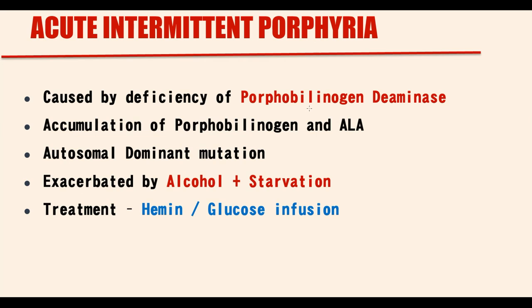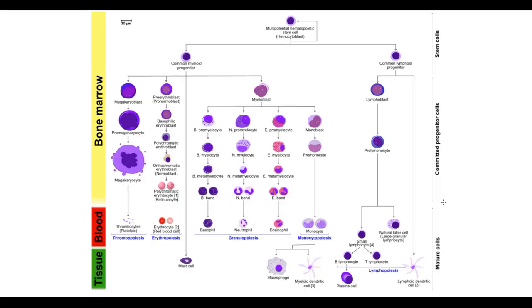To explain the pathogenesis of acute intermittent porphyria, we have to recall heme synthesis. Recall that all blood cells in our body come from the stem cell.